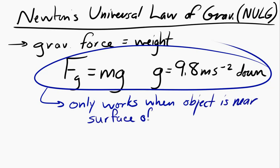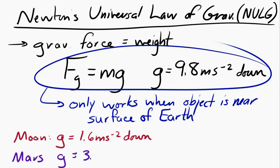Now, we can also extend it. If the object were on the Moon's surface, then we can use the same equation, but just change g to equal 1.6 meters per second squared down. Or if we go to Mars, then we just change g to be 3.7 meters per second squared down. And if we're on the International Space Station in orbit, then we change g to equal 8.7 meters per second squared downward.